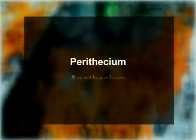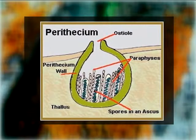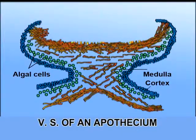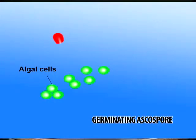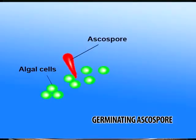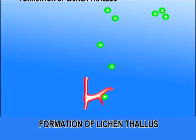The ascomata or ascocarps may be either of the perithecium or apothecium type. The perithecium is a flask-shaped structure in which the asci are borne within a locule. The apothecium is a cup-shaped fruiting body in which the ascus-bearing tissue or hymenium is exposed at maturity. The ascospores are discharged and start germination by producing hyphal branches. A hyphal branch comes in contact with a suitable alga and results in a new lichen thallus.